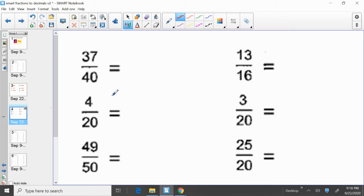So we have thirty-seven fortieths. Thirty-seven divided by forty. That equals zero point nine two five. And again, it's simply thirty-seven divided by forty.